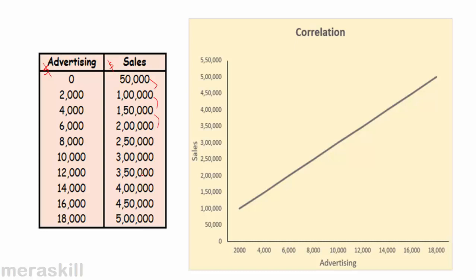In this case there is a perfect correlation: with each $2,000 change in advertising, sales increases by exactly $50,000. It is a positive correlation — when advertising goes up, sales also goes up, and proportionately. Normally in such a situation we say the correlation is 1.